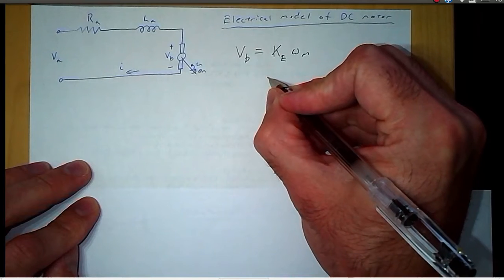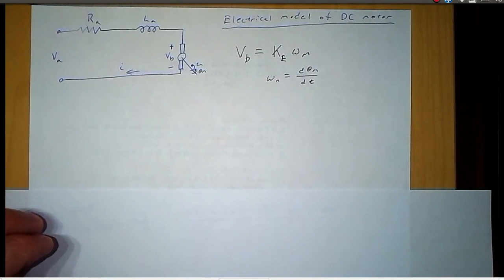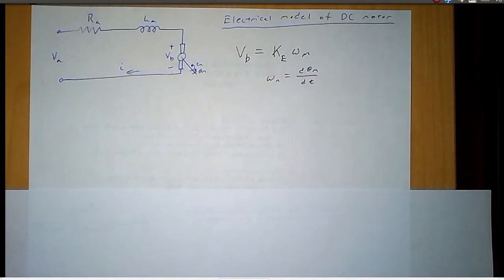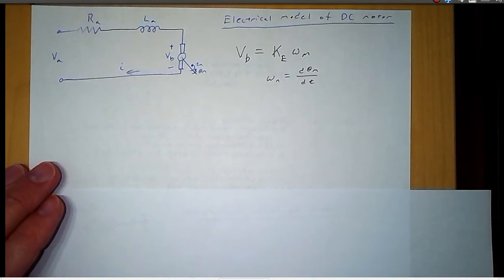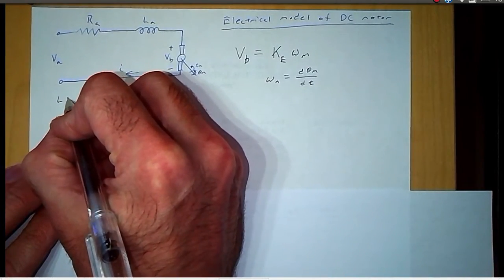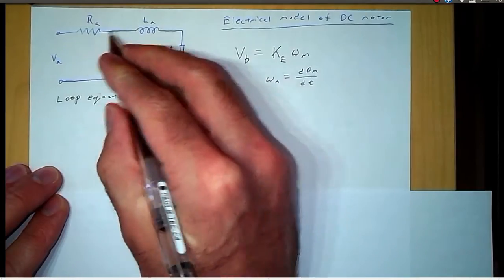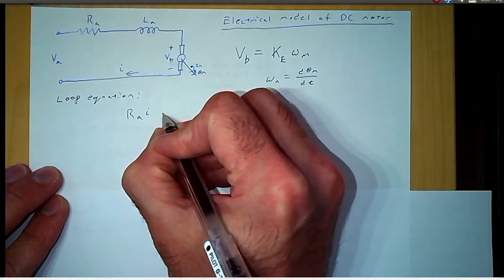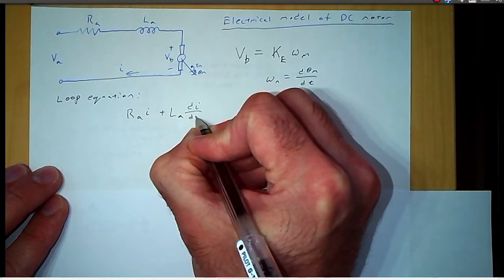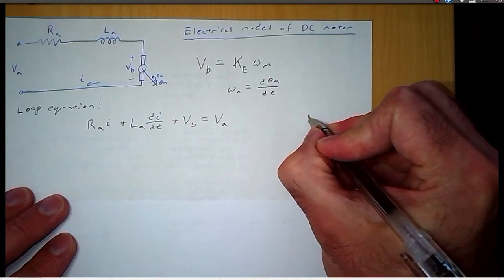Angular velocity is the time rate of change of the motor's position. We want to control the shaft — describe the shaft position in terms of the input voltage — so we need a numerical model relating the two. We're going to start with the loop equation for this electrical model. The voltage drop around the loop is equal to VA: RA times I plus LA times dI/dt plus VB equals VA. We'll call that Equation 1.